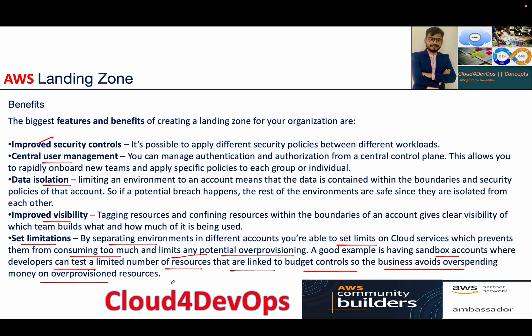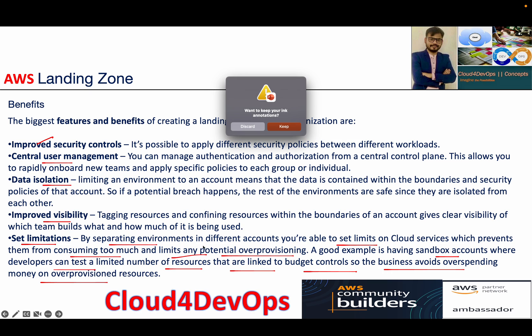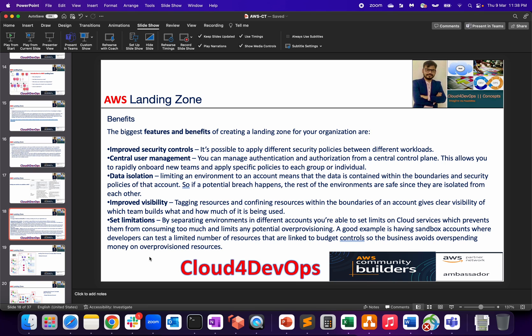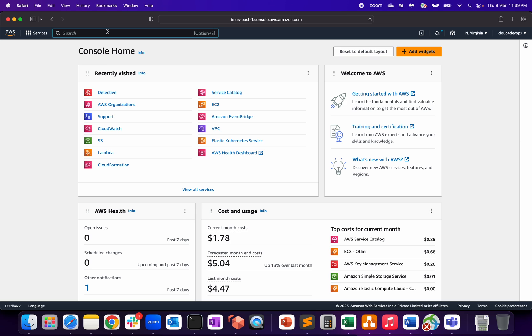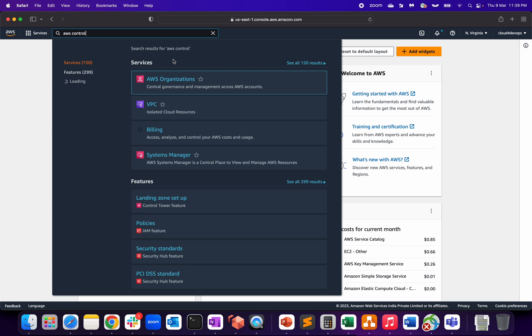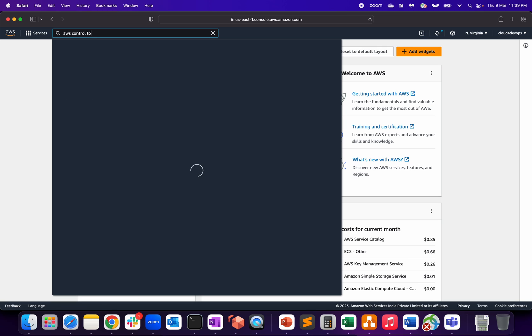So I hope this clears things up in terms of why Landing Zone is required, the concept of Landing Zone, the segregation of accounts, and why this is needed. As for how you can implement it, I'll show you in a practical demo when I cover Control Tower. Let me log in to my AWS account to give you a quick look.